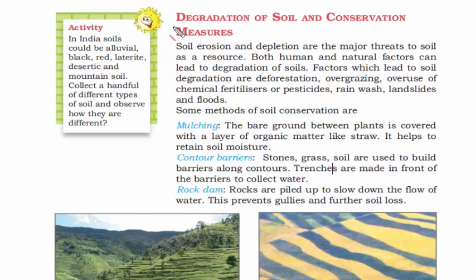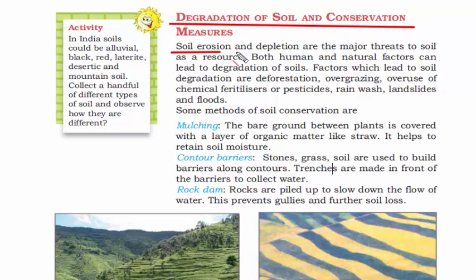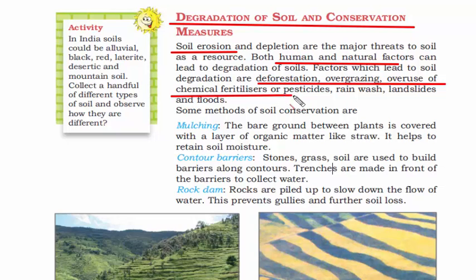Soil degradation, also known as soil erosion, happens because of both human and natural causes. The important factors that lead to soil degradation are deforestation, overgrazing, overuse of chemical fertilizers or pesticides, rain wash, landslides, and floods.